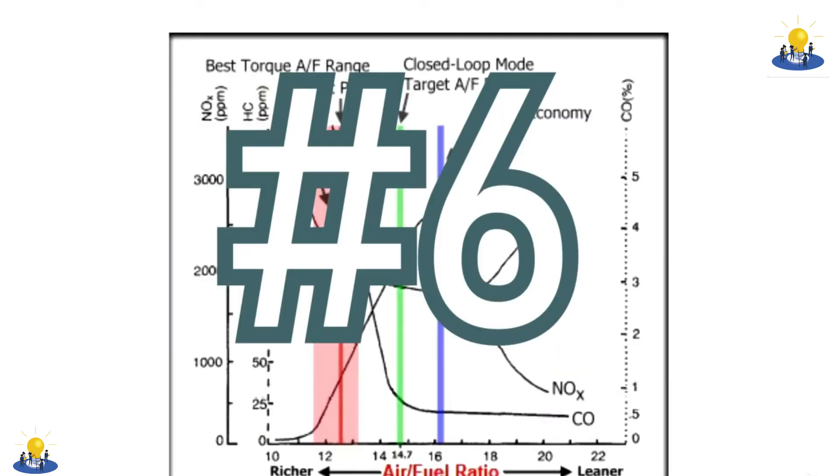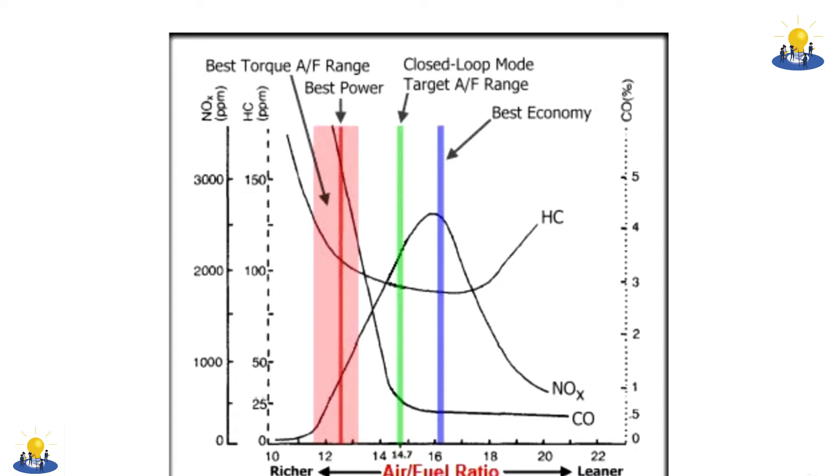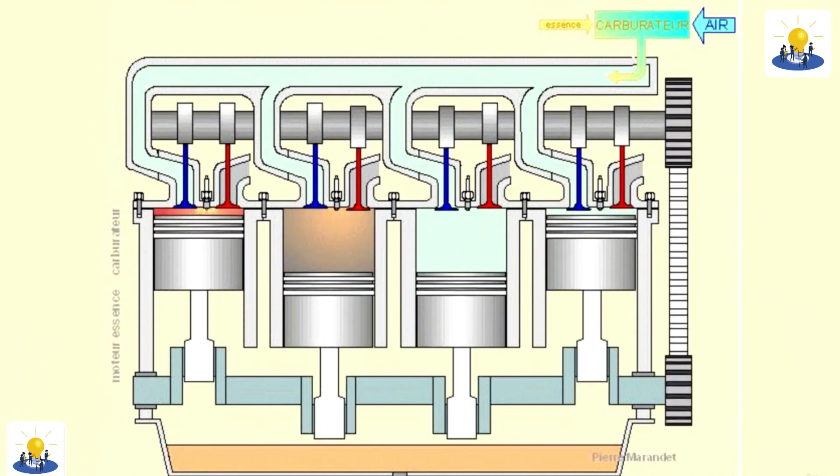Each pound of fuel is mixed with 14.7 pounds of air to form a vaporized mixture, like a mist. Because fuel is much heavier than air,